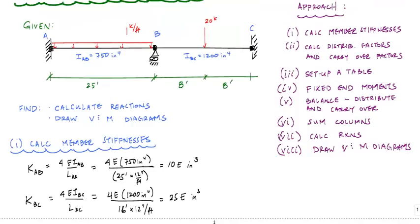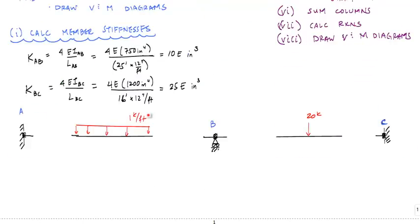Now that I have the member stiffnesses, I like to draw the structure in a blown-up way — meaning I cut it right before each joint and draw it with the internal moments I want to solve for shown. The sign convention for internal moments in the moment distribution method is that any moment is positive going clockwise. So here, this would be one end, here is another end, and these internal moments are considered positive.